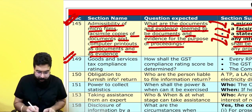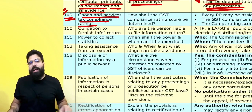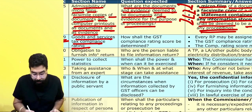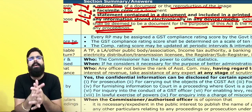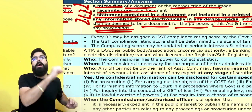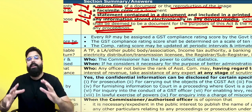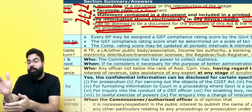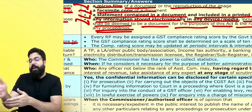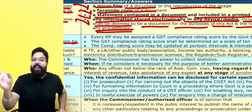Section 149 deals with GST compliance rating. The exam question they may ask: How shall the GST compliance rating be determined? Every person registered under GST will be given a compliance rating based on their compliance. If a supplier files returns on time and complies with all provisions, he will be given a good rating — a 10-star rating. A supplier with a good compliance rating will attract more buyers.